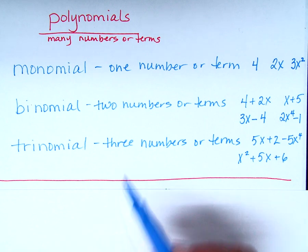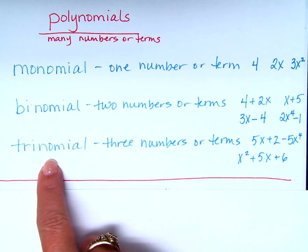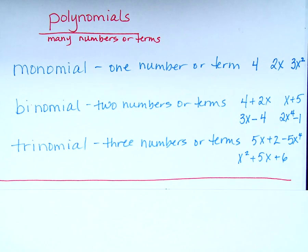What about four numbers or terms? What about five? We could make up words for that, but usually once we get to trinomial, after that it's just polynomial. We could say quadnomial, but after three, we mostly just say polynomial.